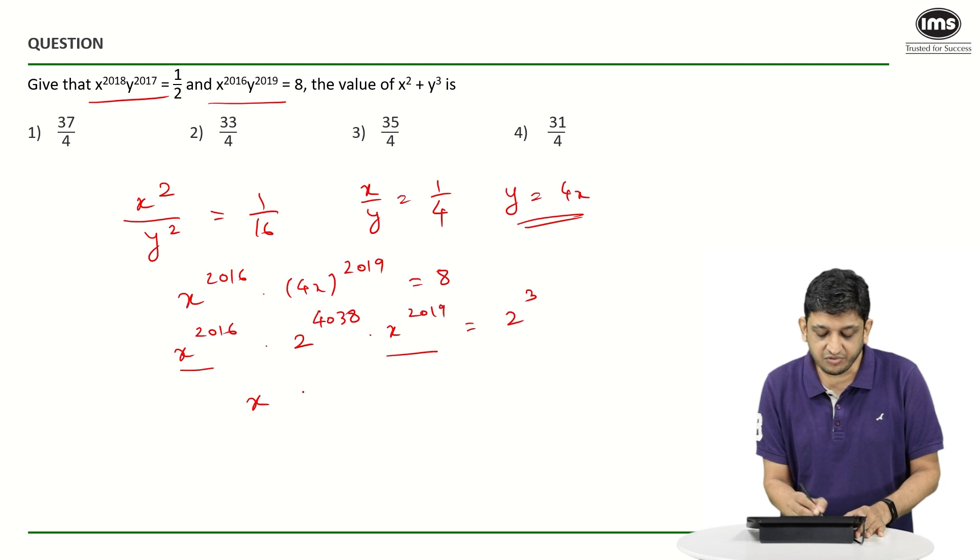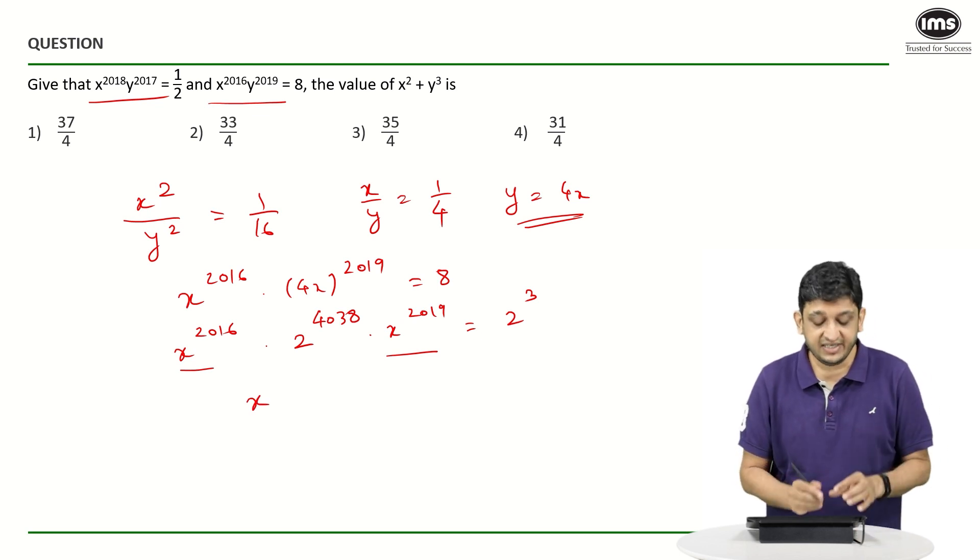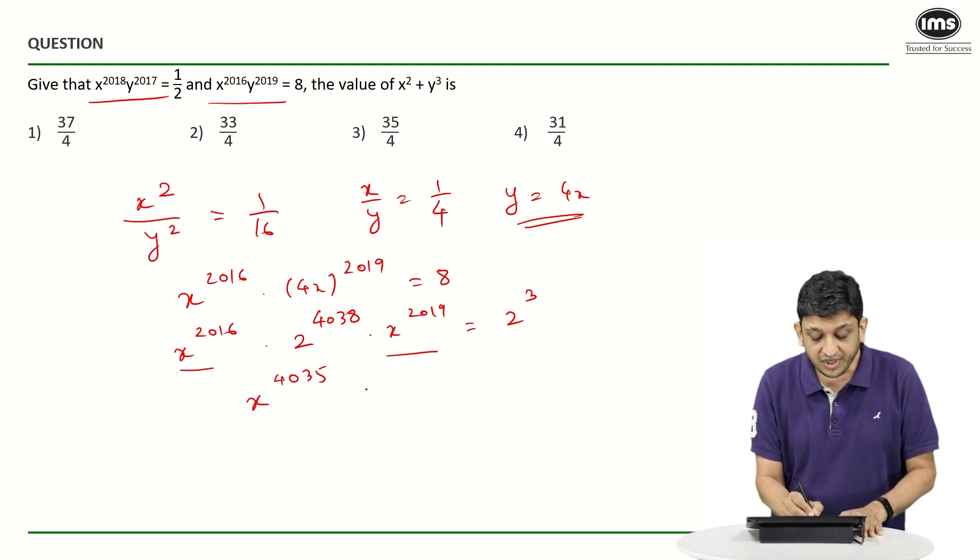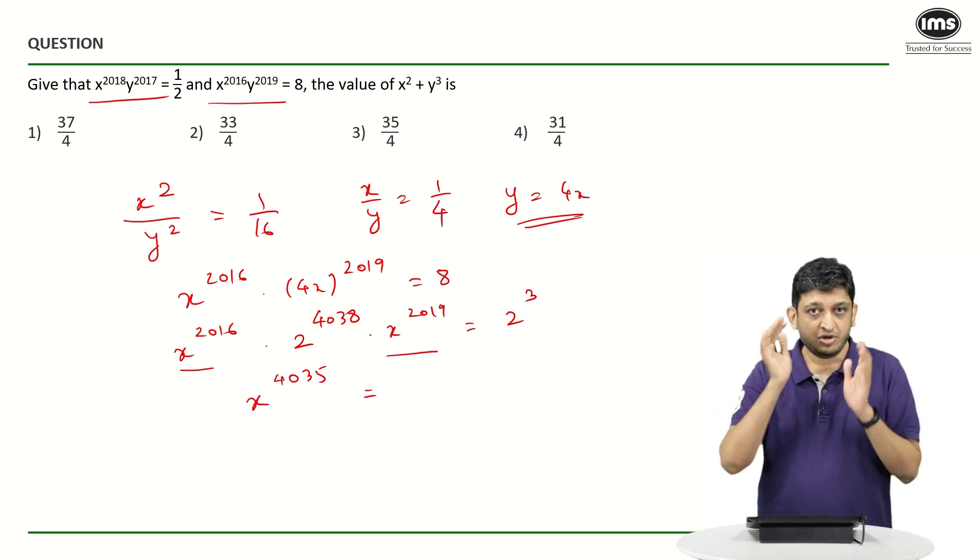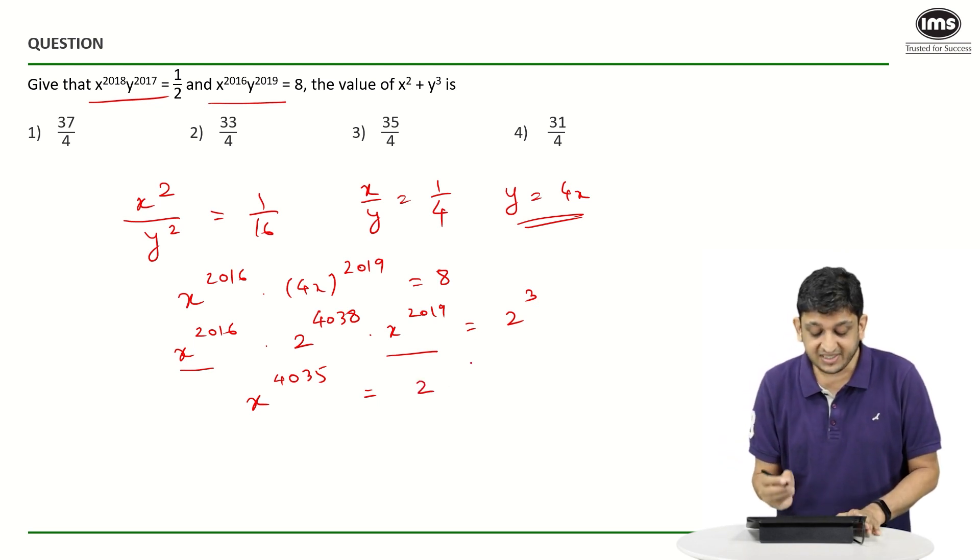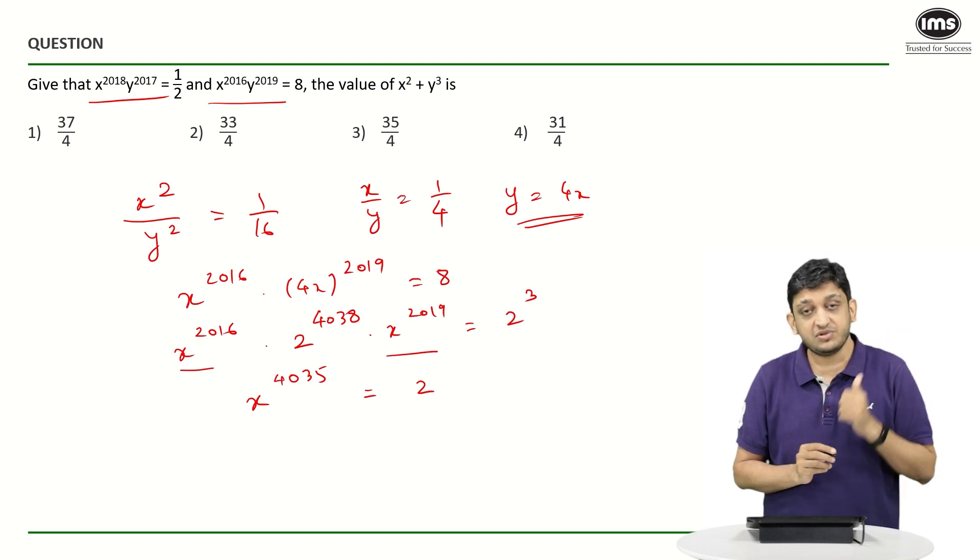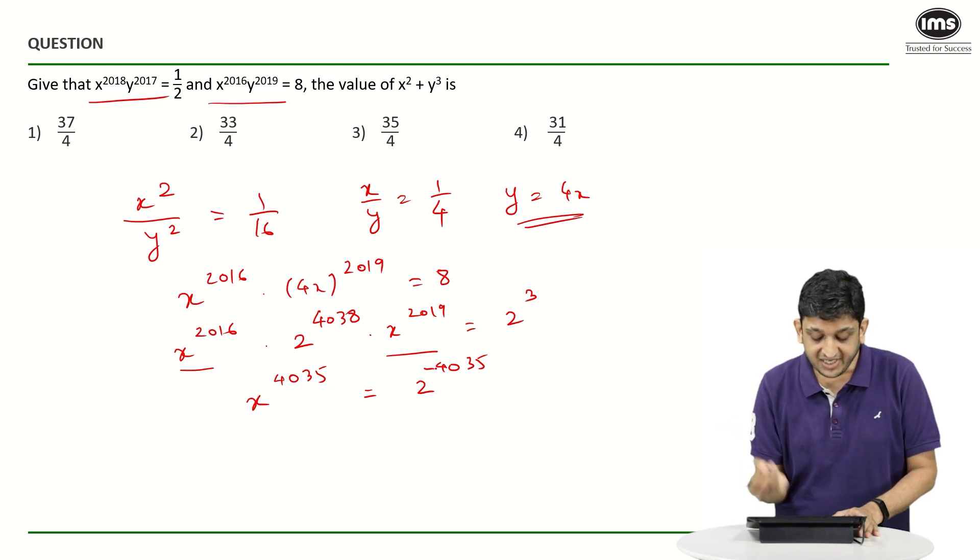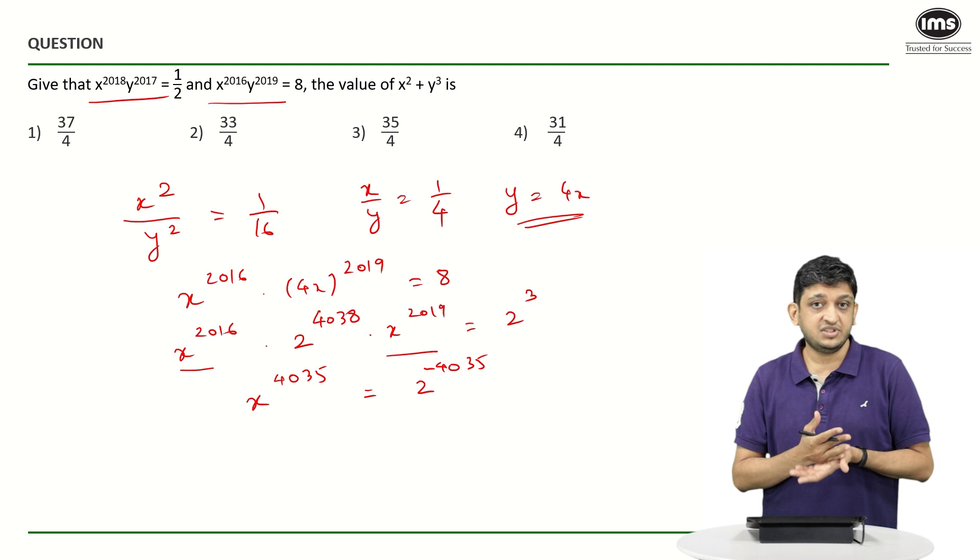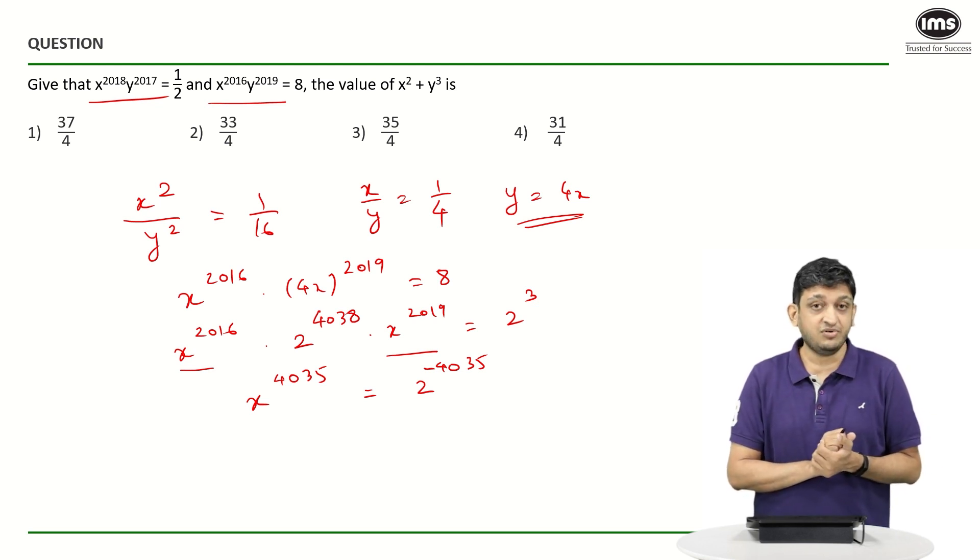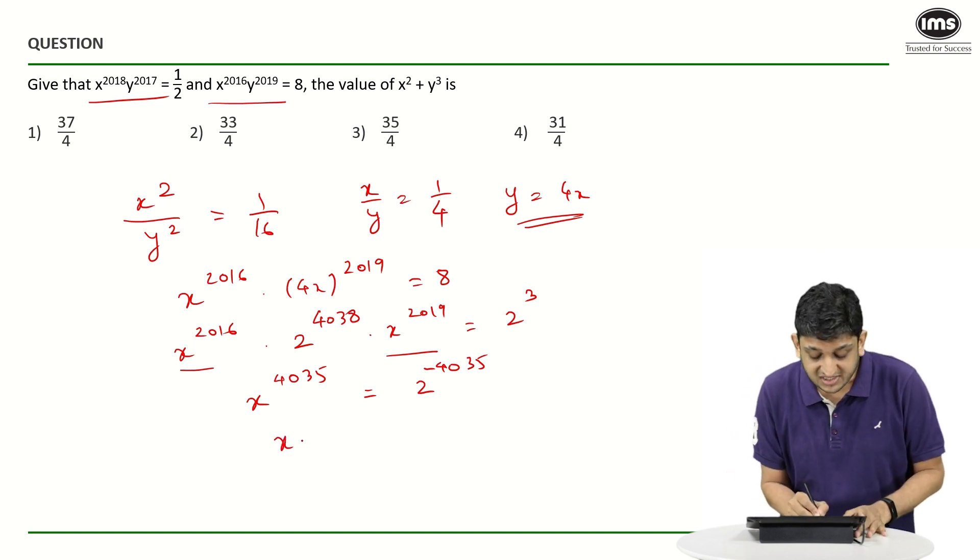If you add the powers of X here, you are going to see X raise to 2016 plus 2019 is going to be X raise to 4035. And if you take this 2 raise to 4038 to the right hand side, it is going to become 2 raise to minus 4038. So what we will be left with is 2 raise to 3 minus 4038, which is 2 raise to minus 4035. So X raise to 4035 will be equal to 2 raise to minus 4035. What does that tell us about the value of X? The value of X is going to be 1 by 2.